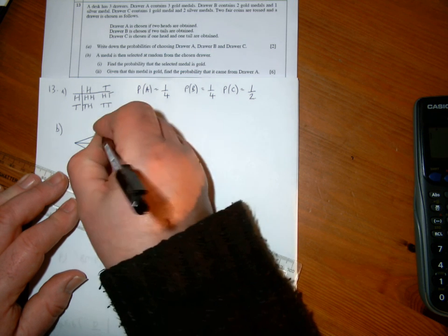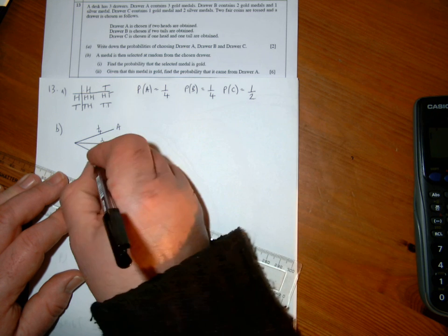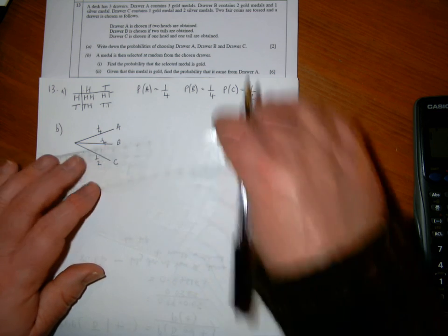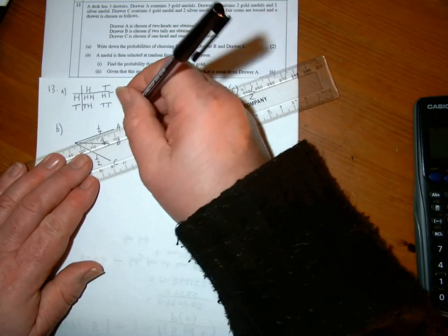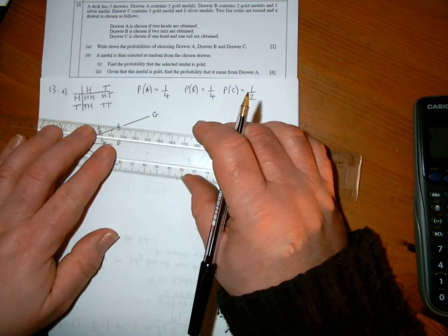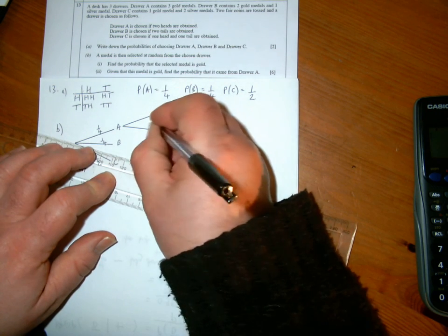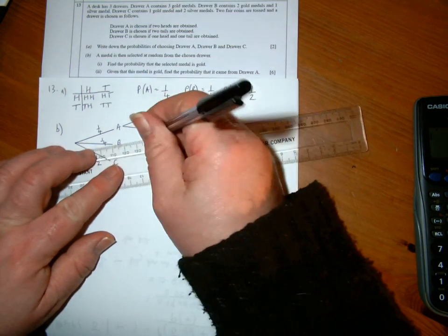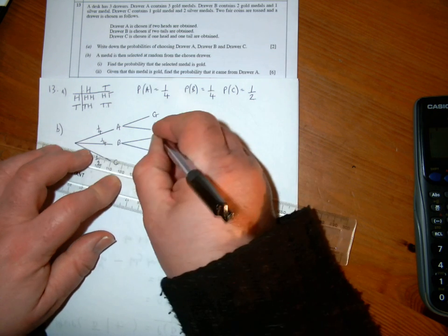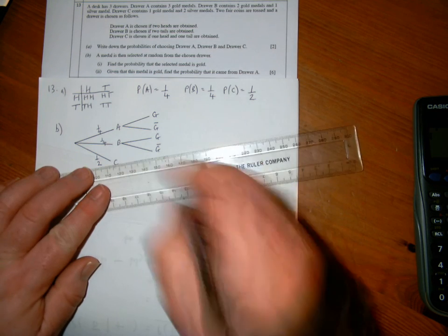Drawer A probability is one-quarter, drawer B is a quarter, drawer C is a half. And then when I go into drawer A, do I pick out a gold or not a gold? Drawer B similar: I want to know whether I draw a gold or not a gold. And drawer C, same choice again.